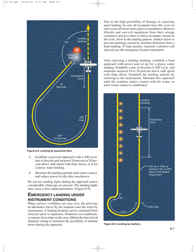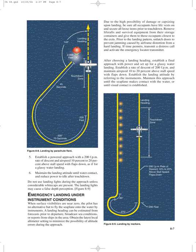In an emergency landing under instrument conditions when surface visibilities are near zero, the pilot has no alternative but to fly the seaplane onto the water by instruments. A landing heading can be estimated from forecasts prior to departure, broadcast sea conditions, or reports from ships in the area. Obtain the latest local altimeter setting to minimize the possibility of altitude errors. Due to the high possibility of damage or capsizing, be sure all occupants have life vests on and secure all loose items. Remove life rafts and survival equipment from storage and give them to occupants nearest the exits. Unlatch doors prior to the landing pattern to prevent jamming, and if time permits, transmit a distress call and activate the emergency locator transmitter. After choosing a landing heading, establish a final approach with power set up for a glassy water landing, with a rate of descent of 200 fpm and airspeed 10–20% above stall speed with flaps down. Maintain this approach until the seaplane makes contact with the water or until visual contact is established.